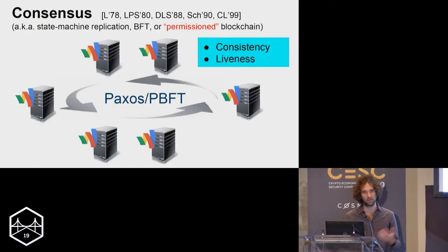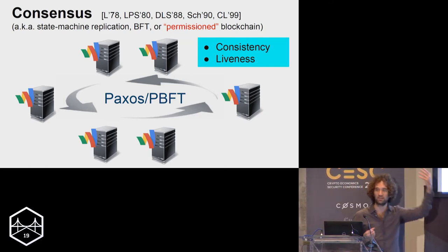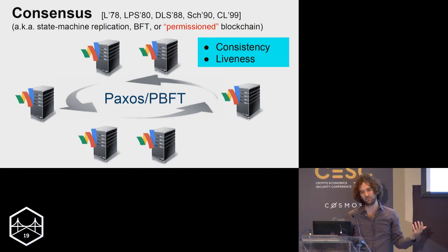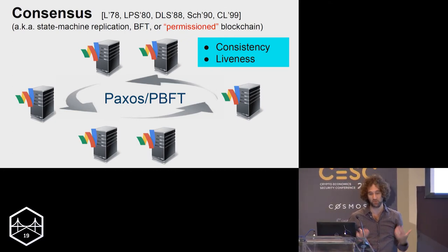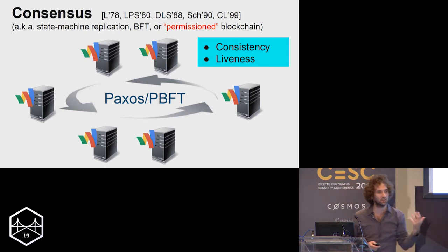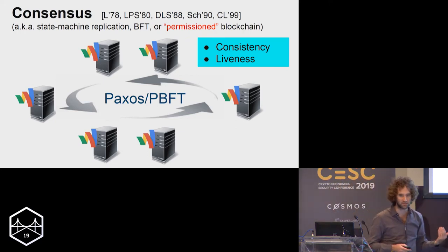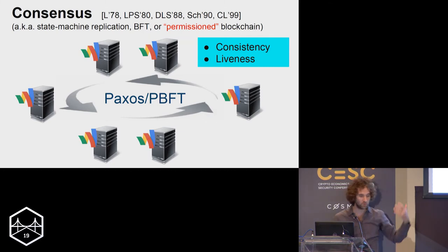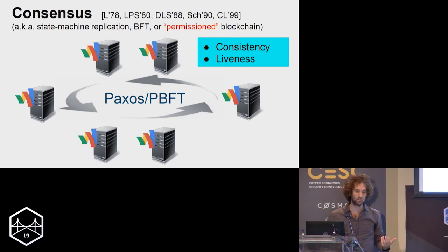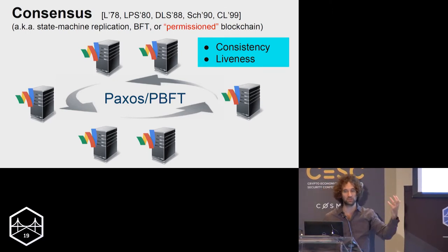To recall what we're talking about: in the consensus problem, we have a set of nodes that would like to replicate a ledger of transactions. This is what you probably refer to today as a permissioned blockchain, but the concept has been studied for a long time from the early 80s. We have these nodes that all want to keep track of a set of transactions, and we require two properties. The first is consistency, which says that all nodes should agree on what the ledger of transactions is. The second is liveness, which says that whenever someone wants to add transactions, it should be possible to add them to the list.